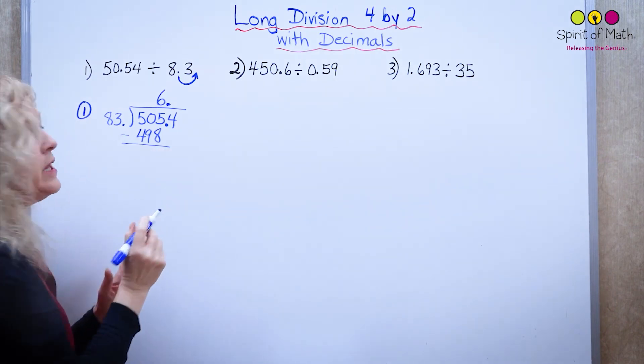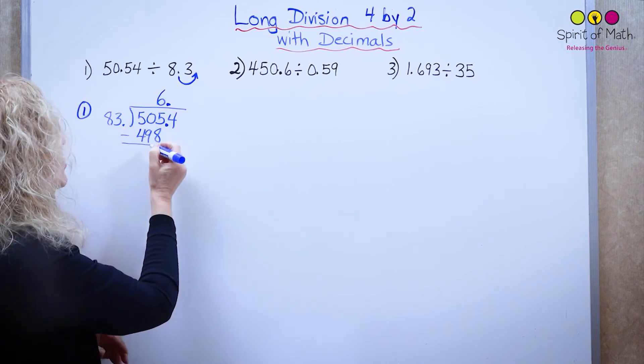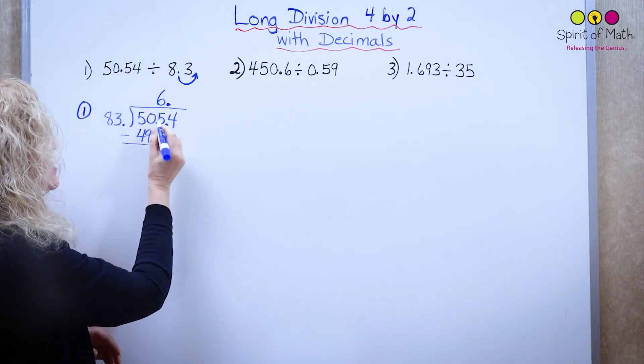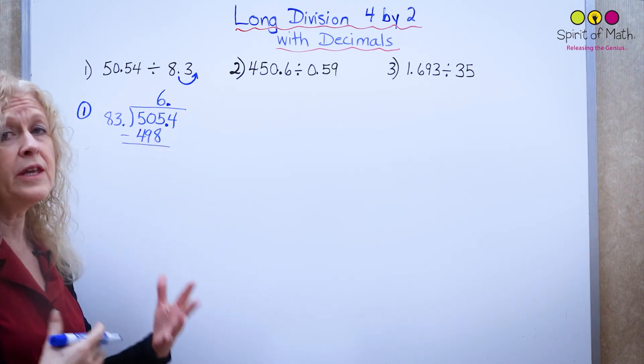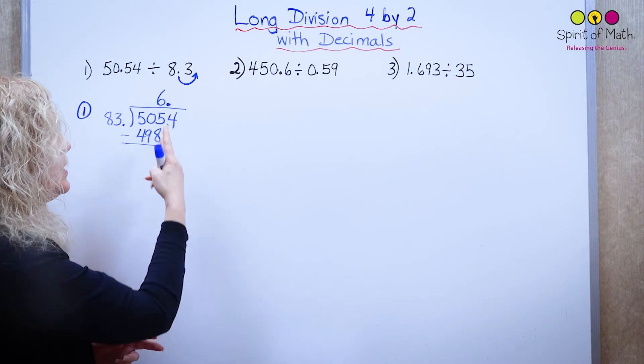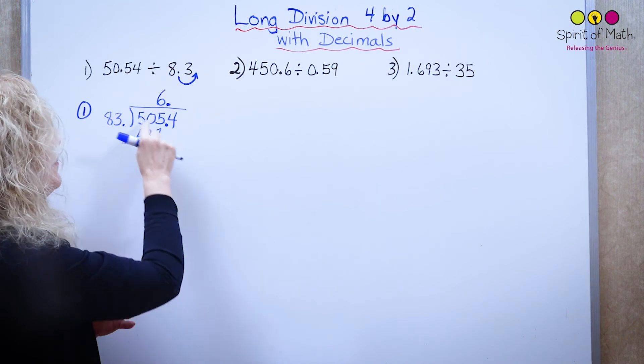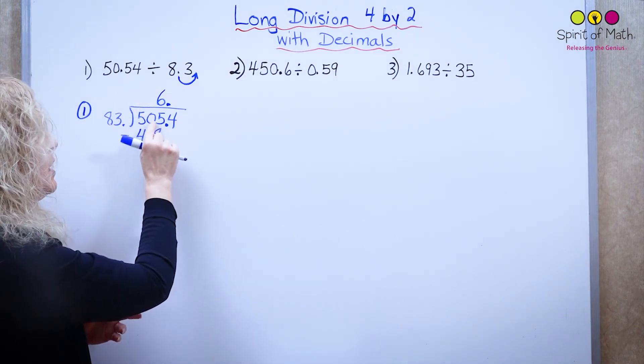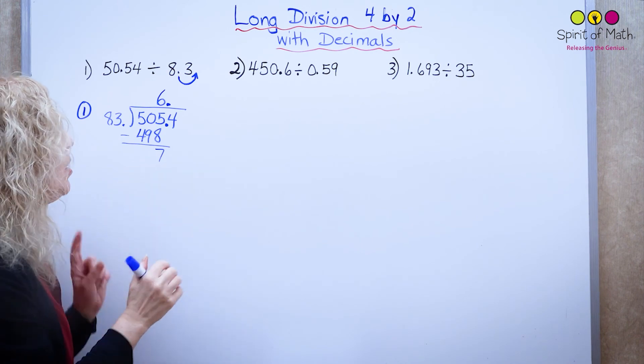And when I subtract that, I'm going to have to practice my subtraction here. So I've got basically 505 subtract 498. Now you can think about adding up. So 498 to 500 is 2, plus another 5 is 7, so you know that's going to be 7. Now if you wanted to cross off, you would have crossed off the 50, put 49, and carried the 5, so you have 15 subtract 8. But it's 7.